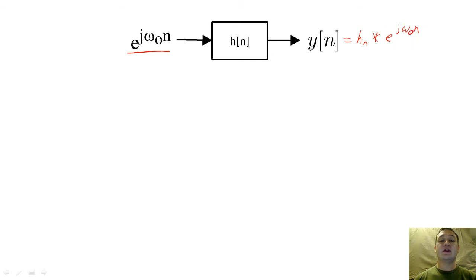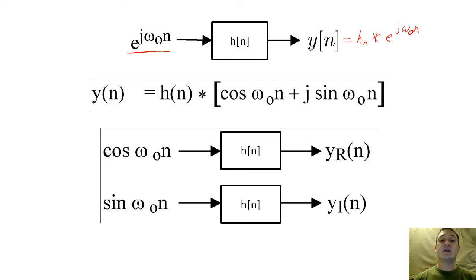If we convert e to the j omega naught n to Cartesian coordinates using Euler's relation, we realize that our original system is actually a pair of systems with real-valued inputs and outputs.